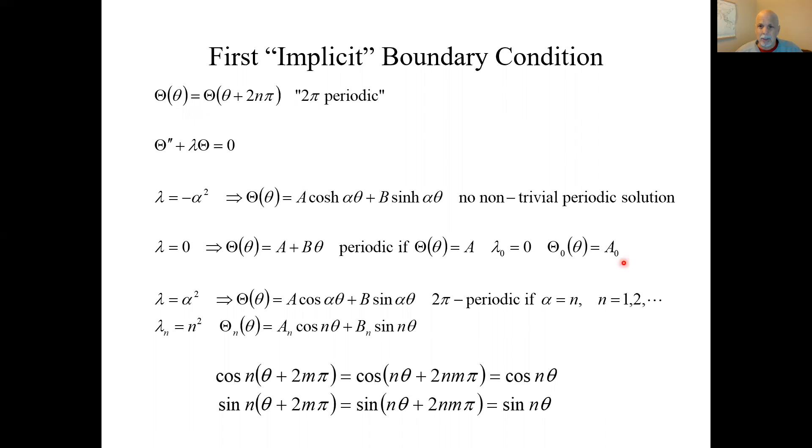Zero is a valid eigenvalue and its corresponding eigenfunction is constant. And then the positive integers squared are other eigenvalues, and here's the corresponding eigenfunction.